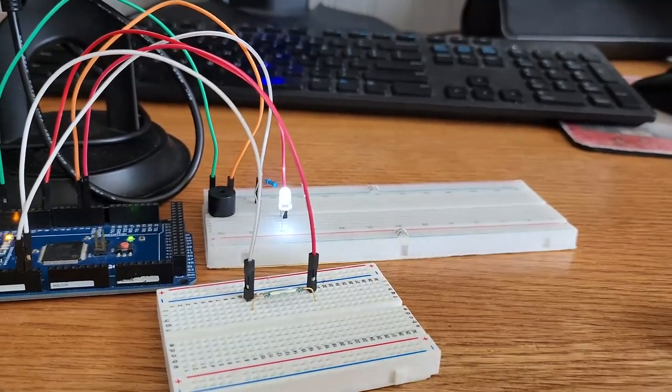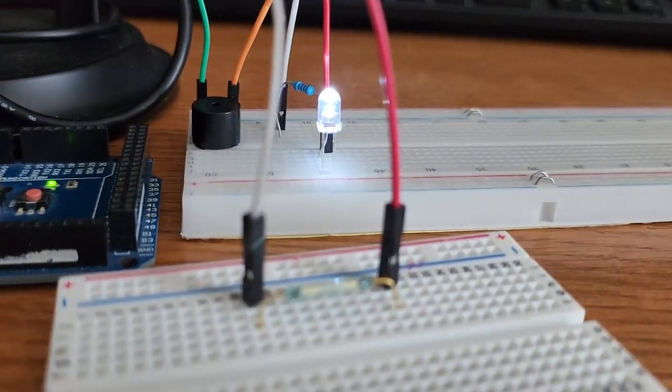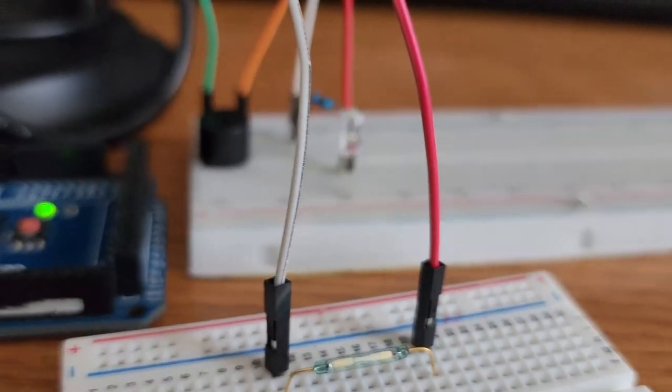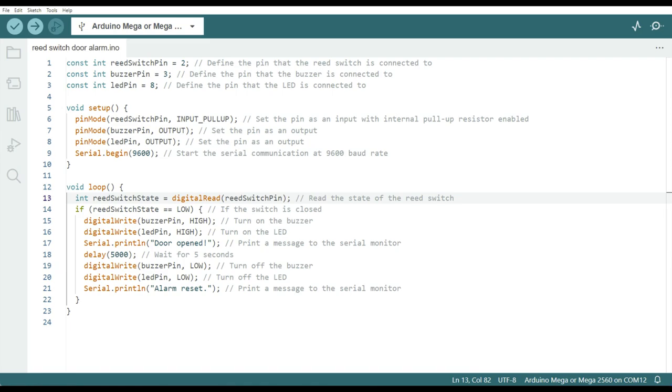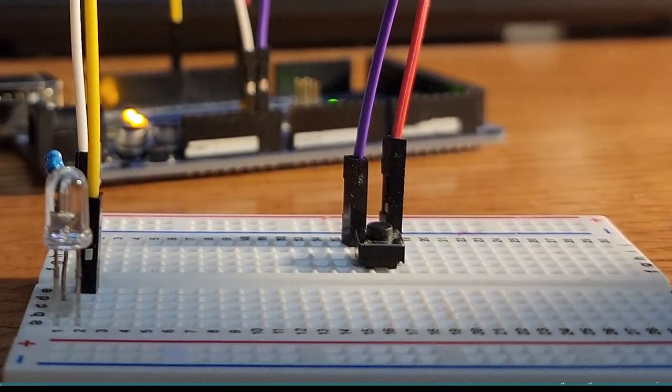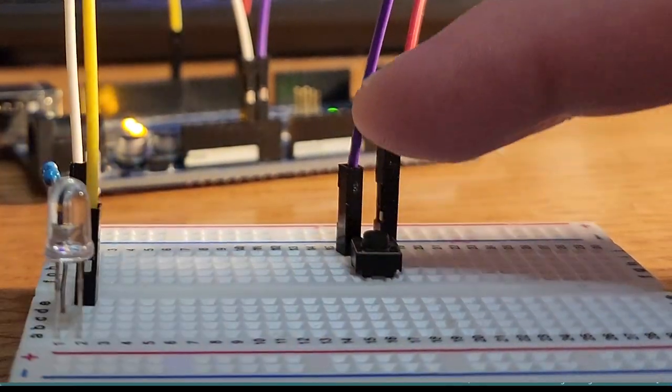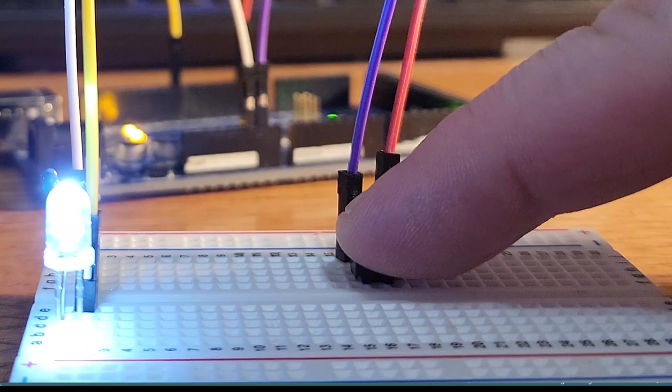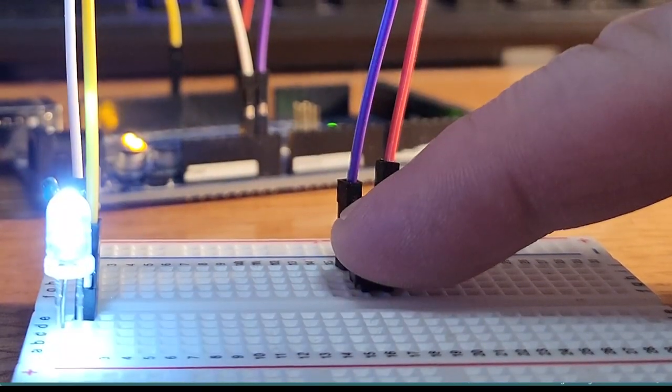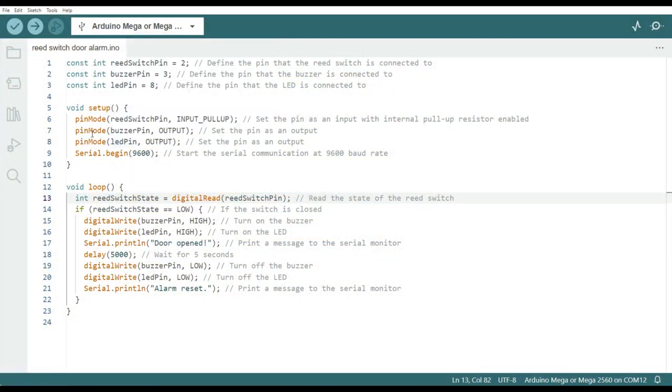So by enabling an internal pull-up resistor, the pin is connected to a voltage, in our case 5 volts, which provides a reliable logic high state when the switch is not pressed. When the switch is pressed, it'll connect the pin to ground, and this will override the pull-up resistor and force the pin to a low state. This makes it much easier to detect when the switch or button is actually being pressed. We're also going to set up our buzzer pin, our piezo buzzer, as an output, and our LED as an output.